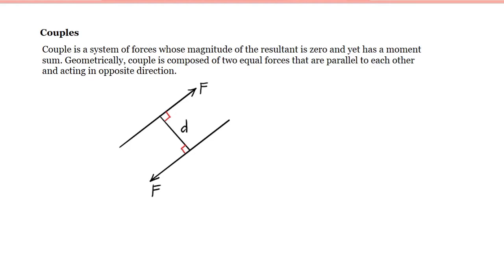Our topic here is about couples. A couple is defined as a system of forces where the magnitude of the resultant is zero and yet has a moment. Geometrically, a couple is composed of two equal forces that are parallel to each other and acting in opposite directions. If we take the resultant of the forces here, we will have zero since these forces are parallel with each other but in opposite direction.